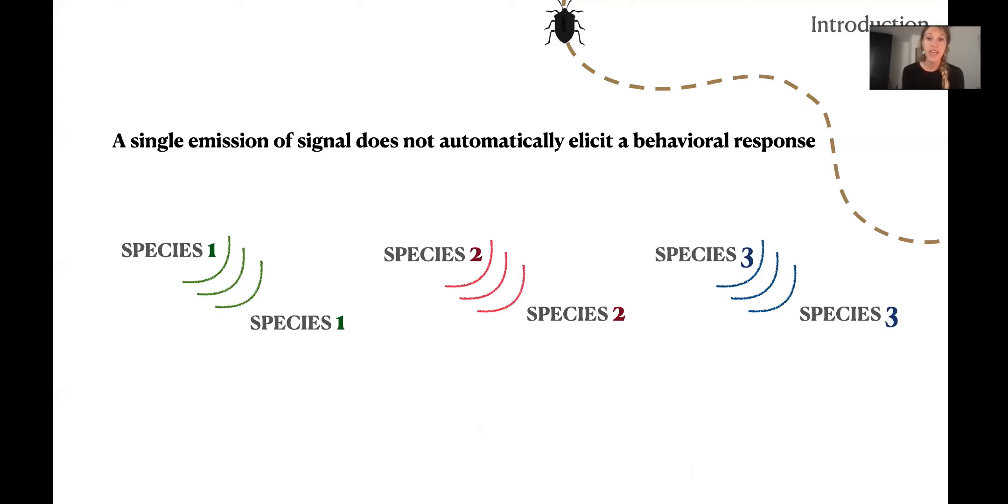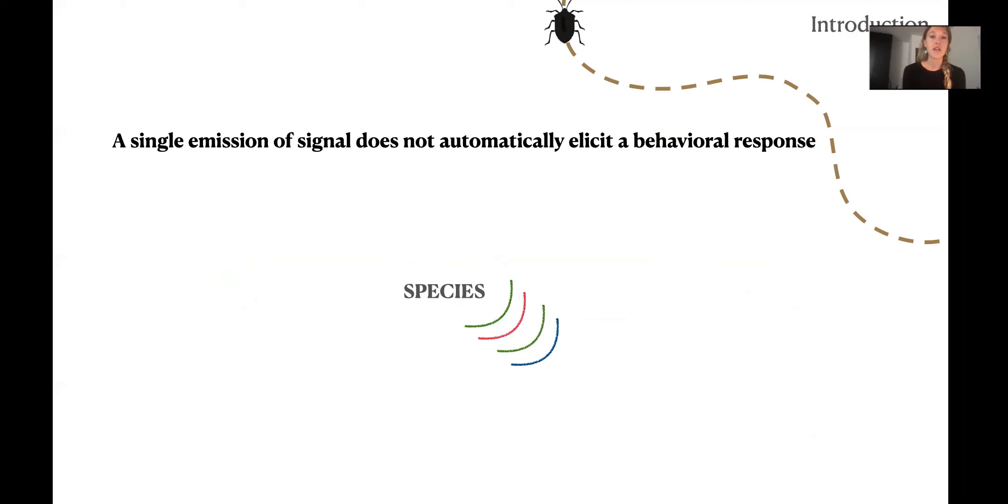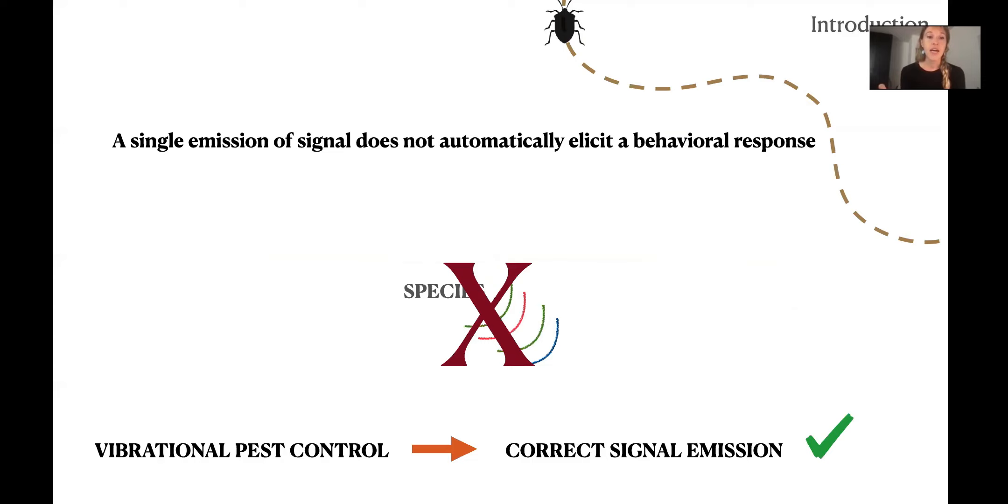However, a single emission of a call does not automatically elicit a behavioral response in a receiver. Each call is species specific, and it is fundamental that the emitted signal contains certain spectral and temporal features capable of positively motivating the receiver to respond and search for the sender. This means that if we don't send the correct signal, we might fail. There might be miscommunication between the individuals. Therefore, for vibrational pest control, there is the need of the usage of a correct signal emission.